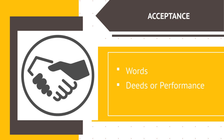If the contract involves a sale of goods — for example, items that are movable — between merchants, then the acceptance does not have to mirror the terms of the offer for a valid contract to exist, unless the terms of the acceptance significantly alter the original contract, or the offerer objects within a reasonable time.